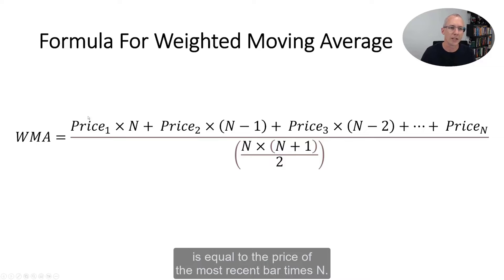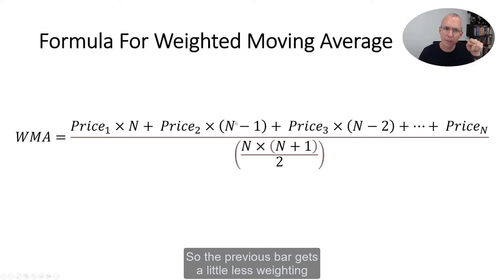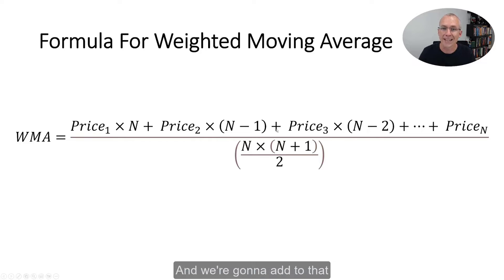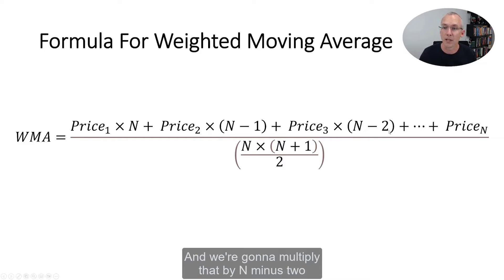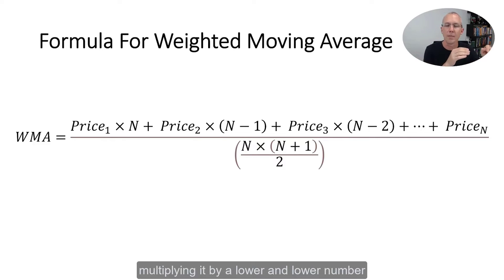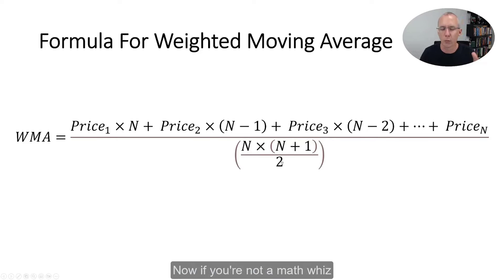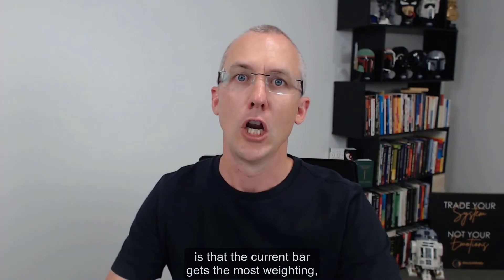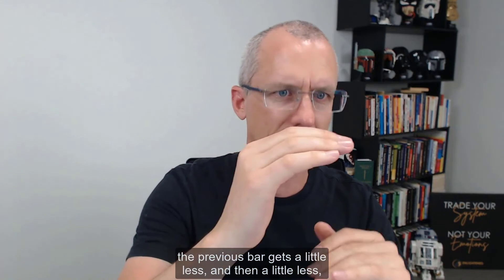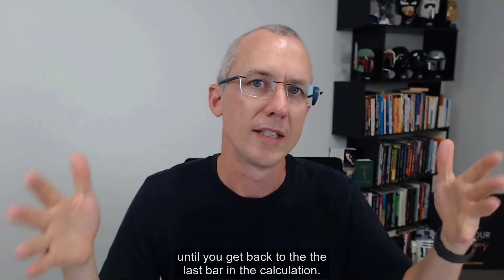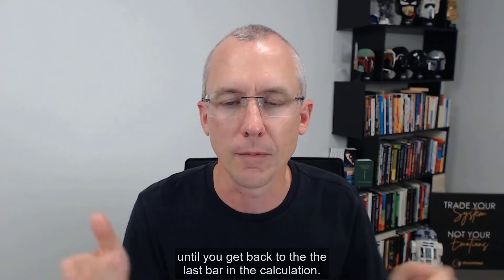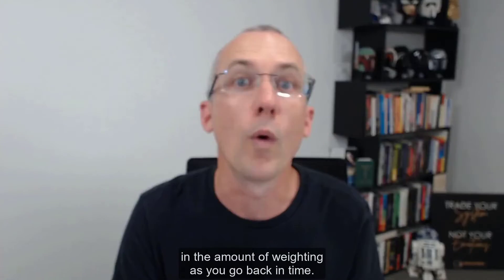The formula for the weighted moving average is: WMA equals the price of the most recent bar times N, plus the price of the previous bar times (N minus 1), plus the third historical bar's price times (N minus 2), and we keep adding those up with decreasing multipliers until we reach the Nth previous bar. We then divide all of that by N times (N plus 1) divided by 2. This results in a linear reduction in weighting as you go back in time.